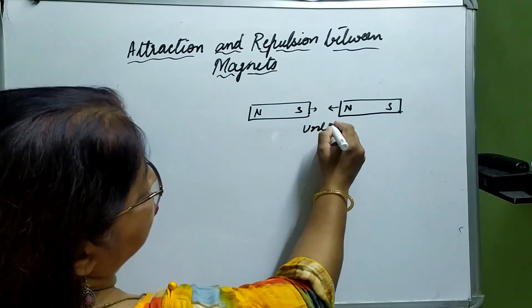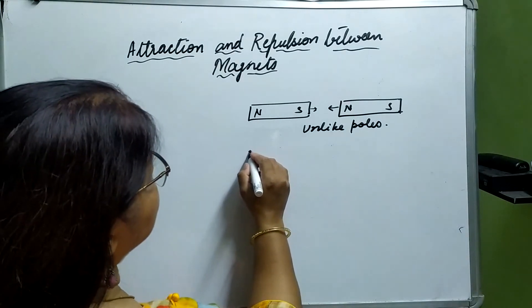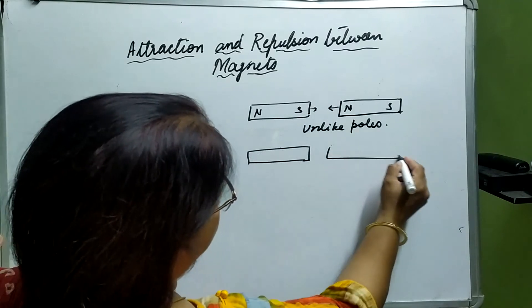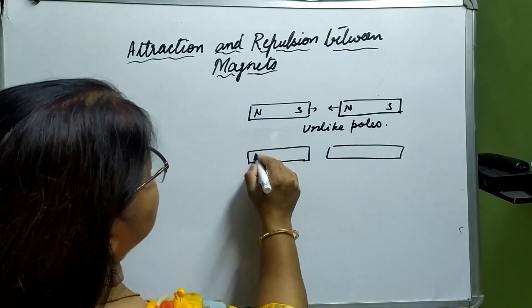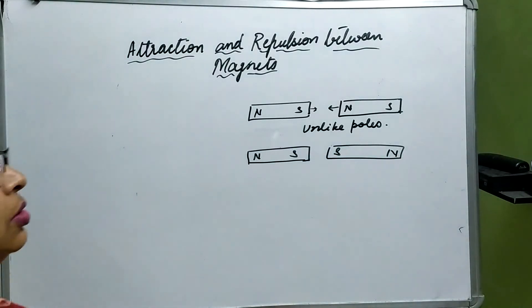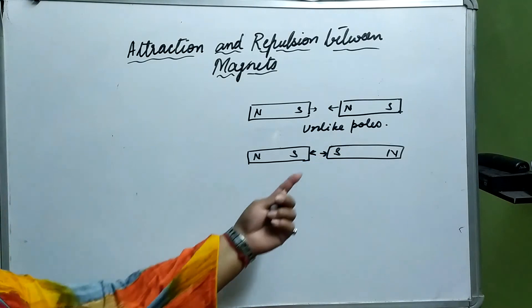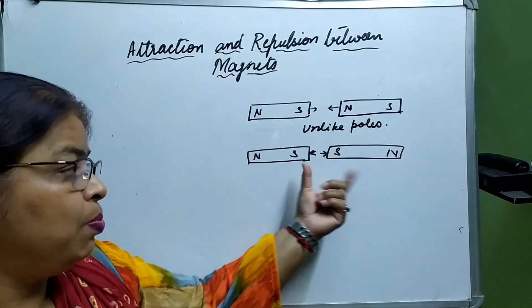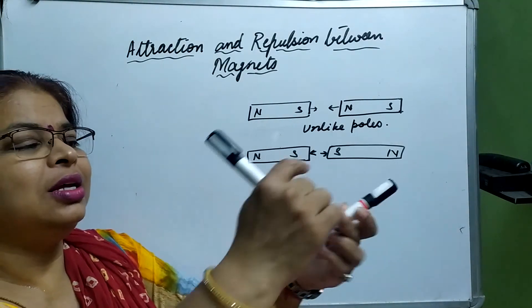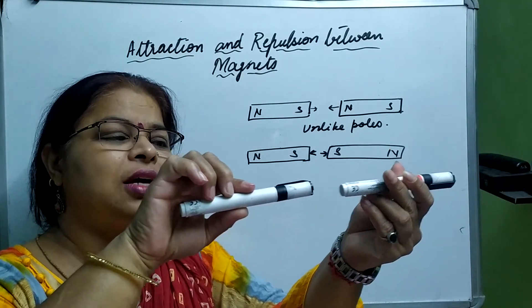When unlike poles are facing each other, they are both going to attract each other. Now let us see another condition. If we have North-South on one magnet and South-North on another, and North faces South, they are going to attract each other.